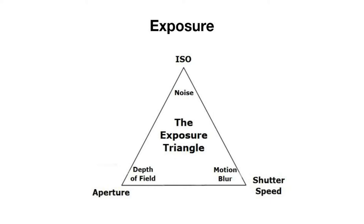When we actually take a photo, we are exposing a light-sensitive material to light in order to create an image, whether that's a digital sensor or an analog camera that uses film. Both ISO and shutter speed happen inside the camera itself, while aperture happens inside of the lens.